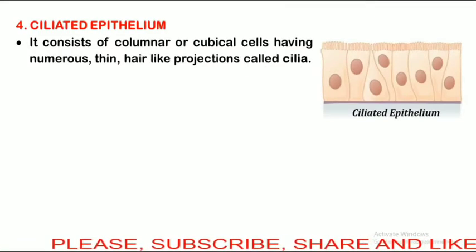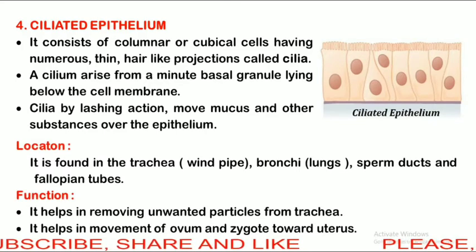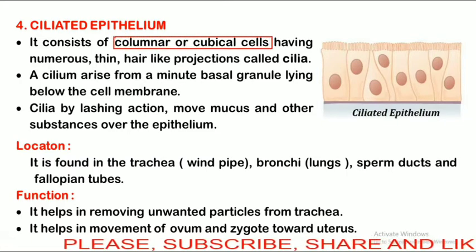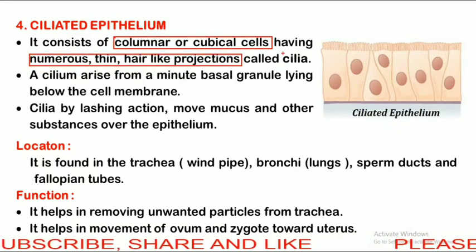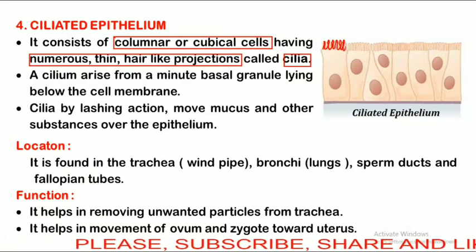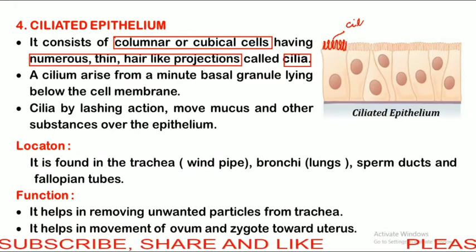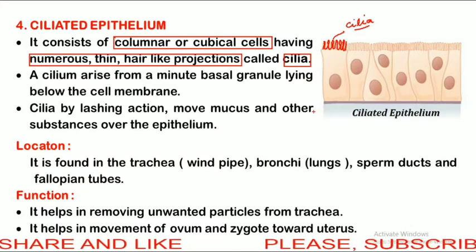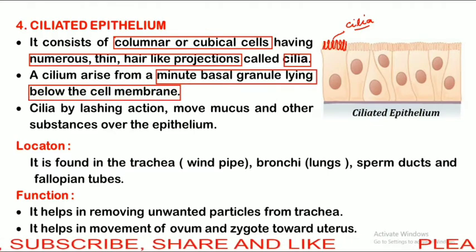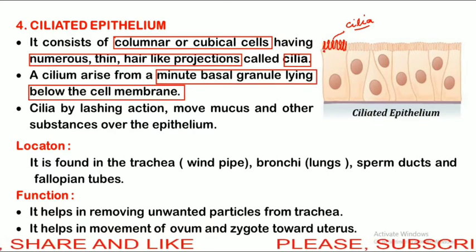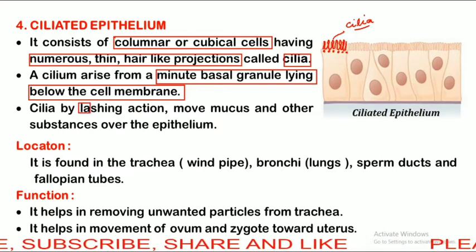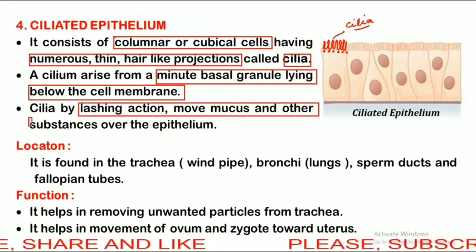Next is the ciliated epithelium. Ciliated epithelium consists of columnar or cuboidal cells having numerous thin hair-like projections called cilia. Here you can see structures like this present at the surface of these columnar cells. These structures are called cilia, and such epithelial tissues are known as ciliated epithelium. Cilia arise from minute basal granules lying below the membrane, and from these basal granules the cilia are originated or developed.